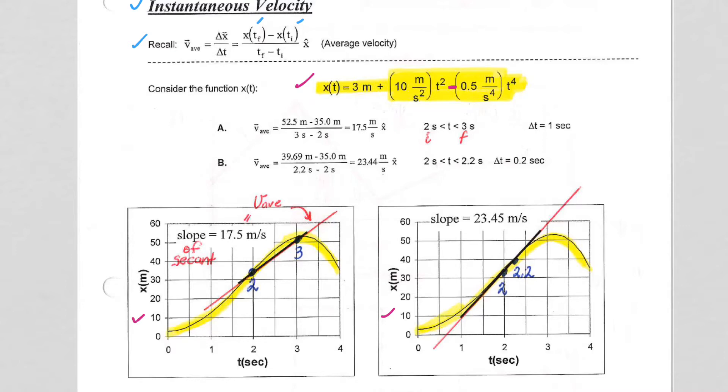For example, let's look at the average velocity based on this position versus time function between 2 and 3 seconds.